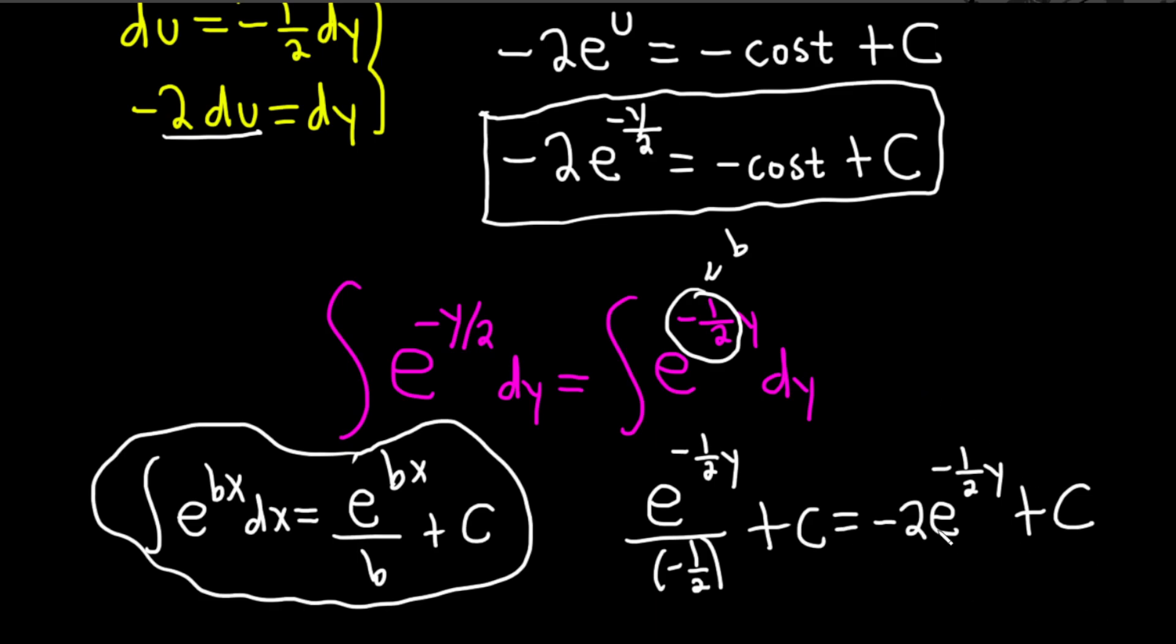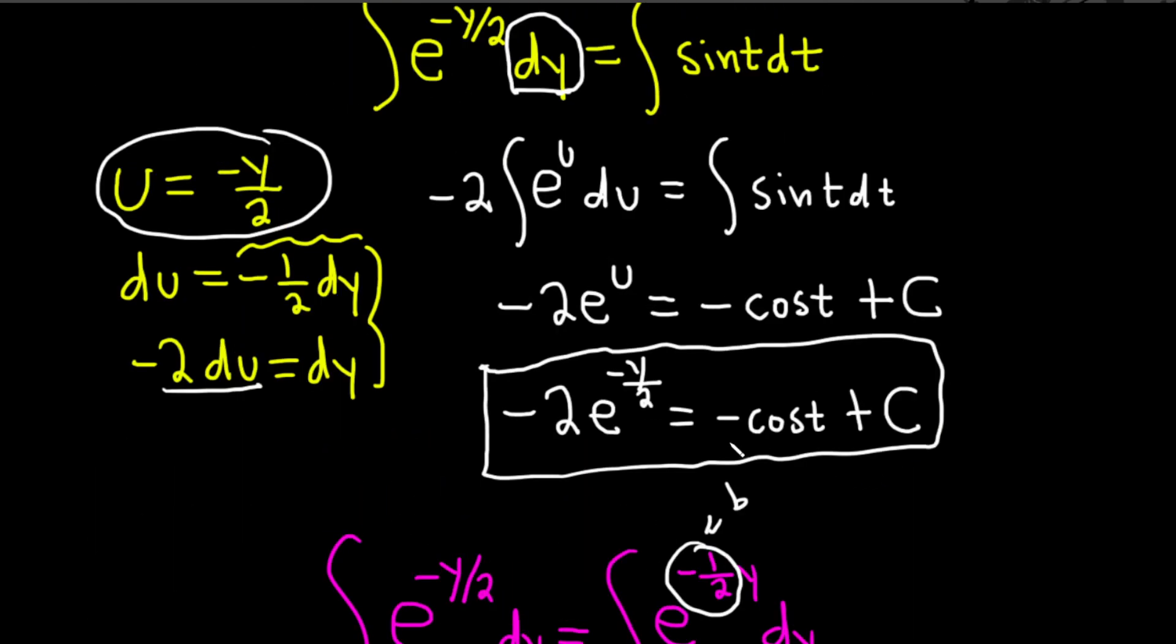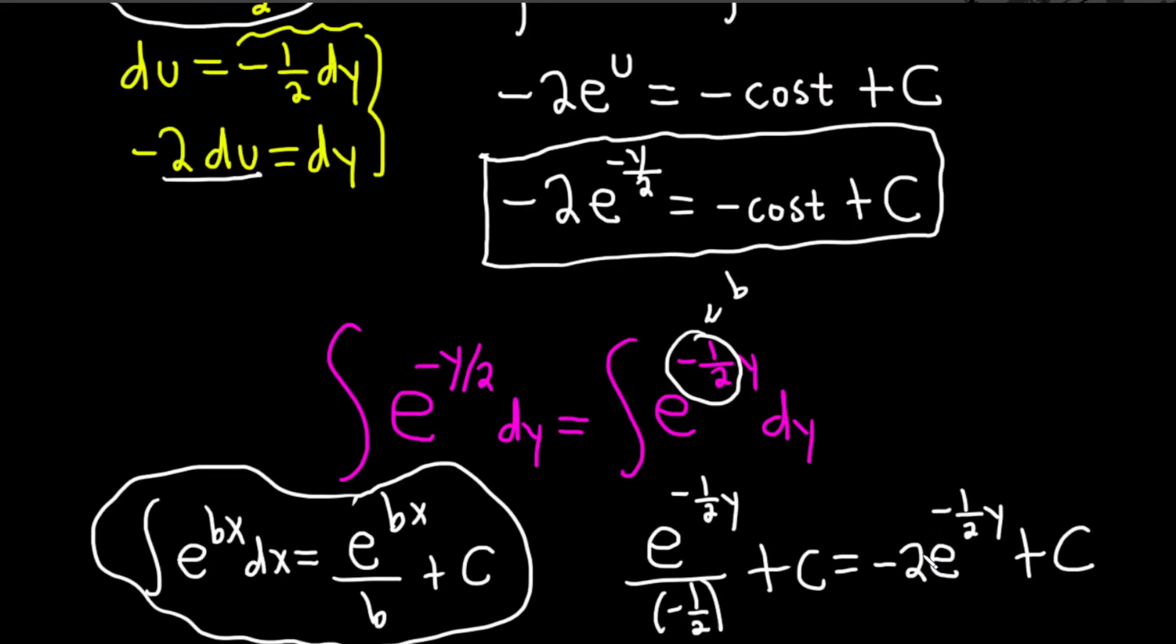And you can see that's exactly what we got up here. Let's check. Yeah, it's right here. Negative 2 e to the negative y over 2. Right? And that's what we have here. Negative 2 e to the negative 1 half y. Same thing, right? Negative 1 half y is the same thing as negative y over 2.